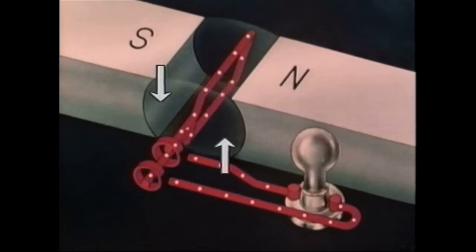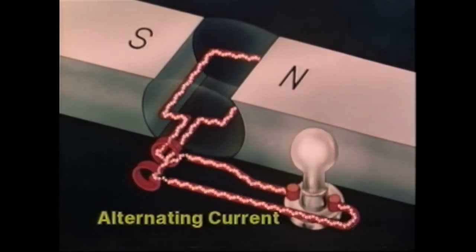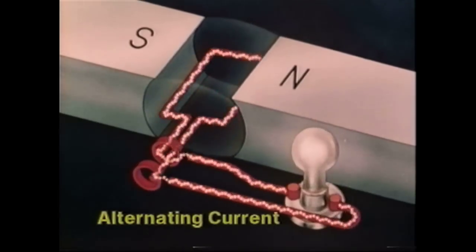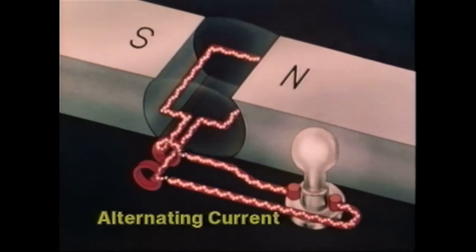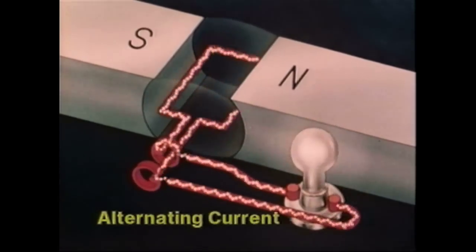This, then, is alternating current, a flow of current in a circuit that reverses direction periodically and is continually varying in magnitude.